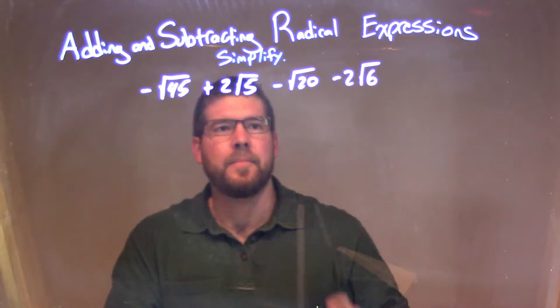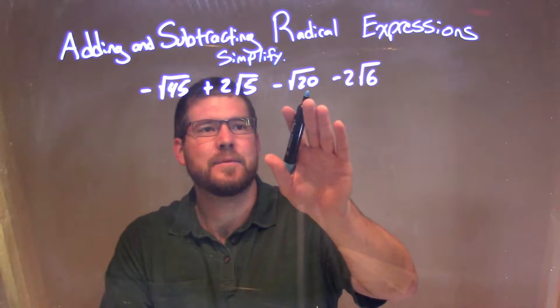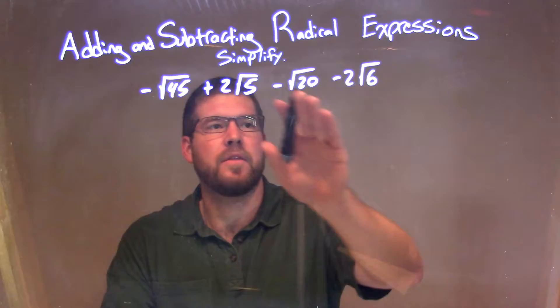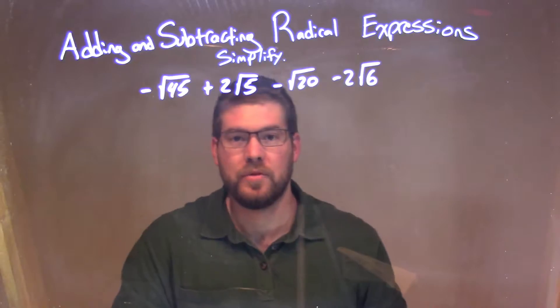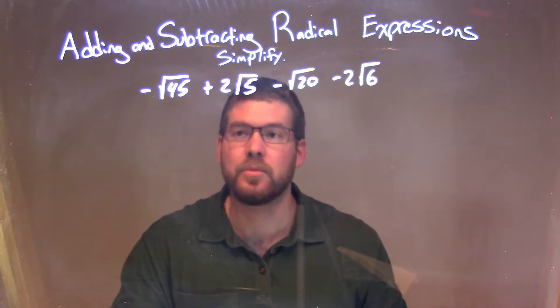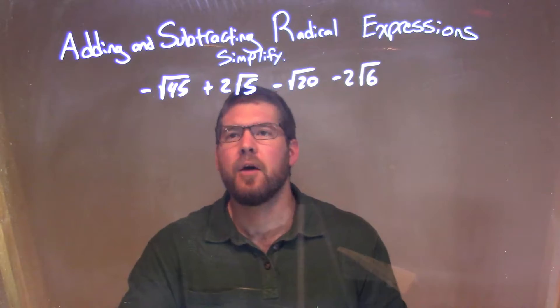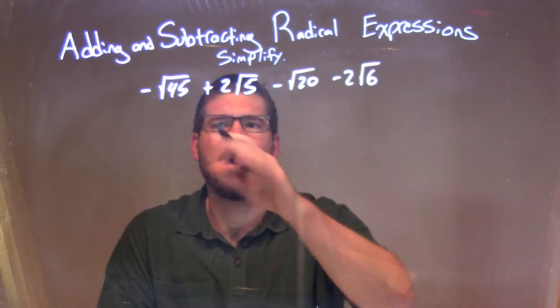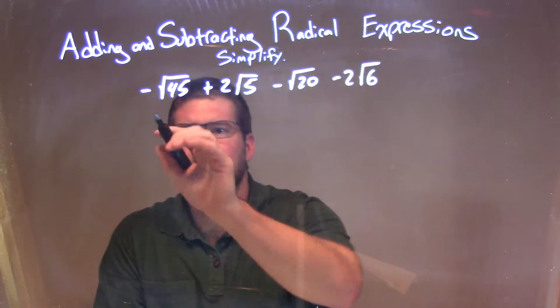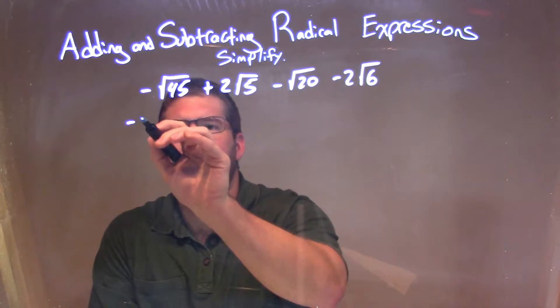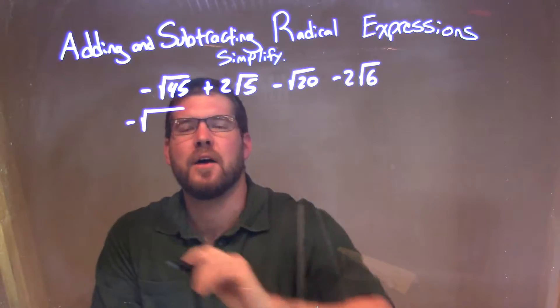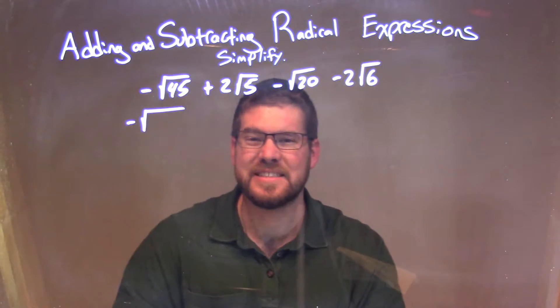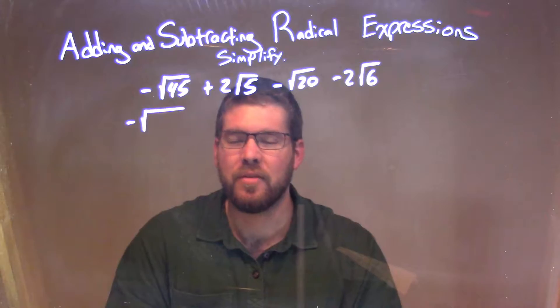What I want to do now is I'm going to try to simplify each one of these square roots as much as possible. And so when I do that, I'm looking at it — what two numbers... for example, this first one here: minus the square root of 45. 45 is 9 times 5.